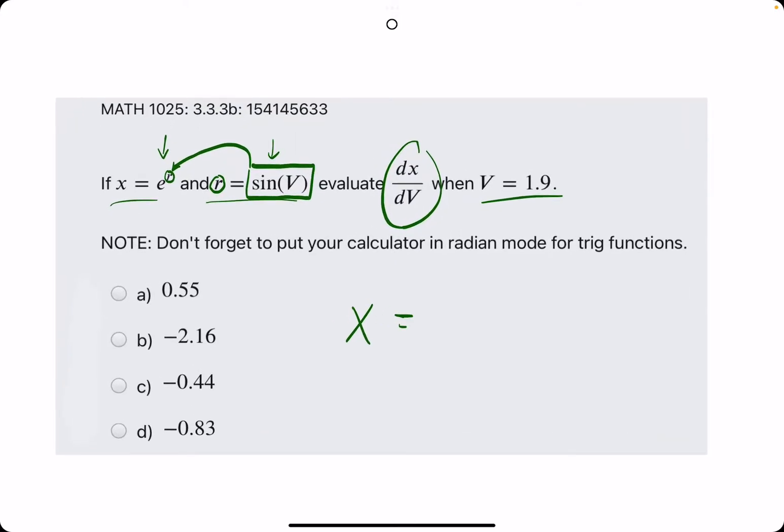So, when we make that substitution, in this case, we will have x is equal to not e to the r, but instead e to the sine of v.